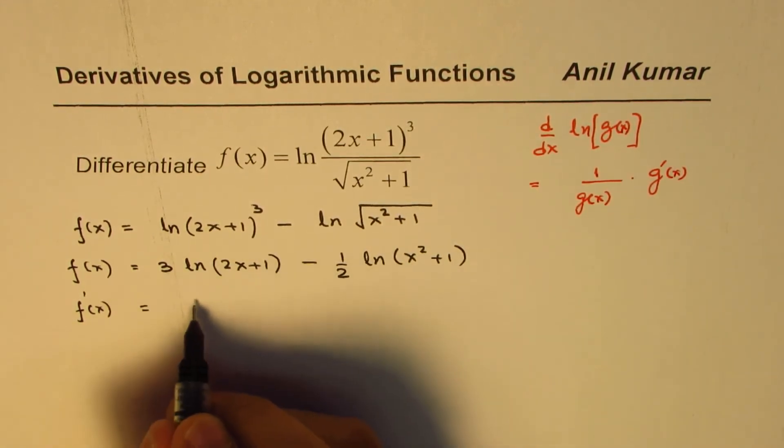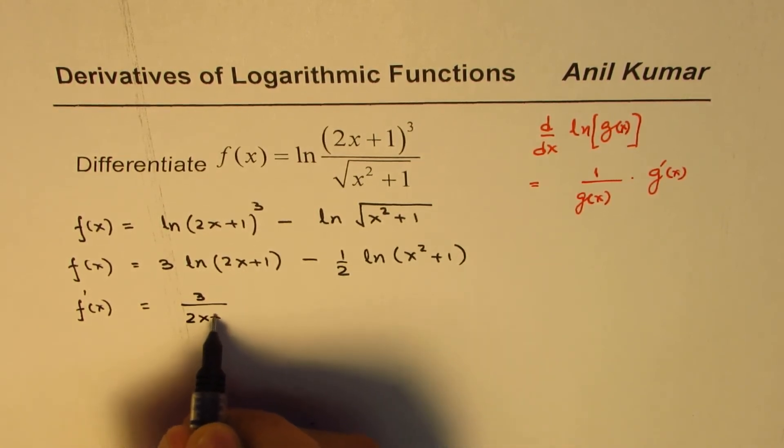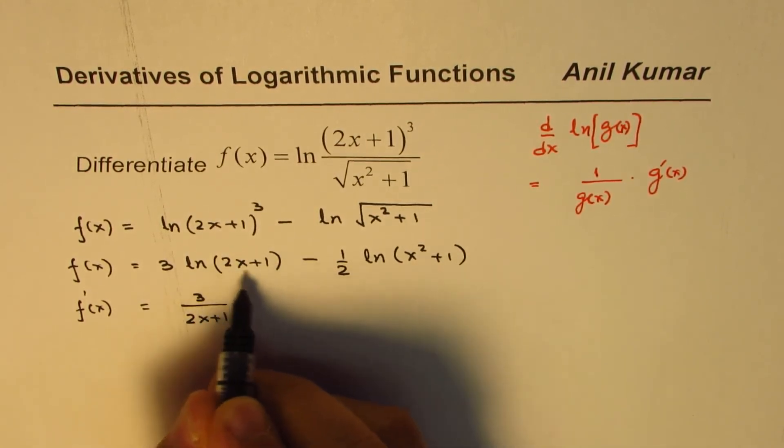So it is 3 over (2x+1) times the derivative of this, which is 2...